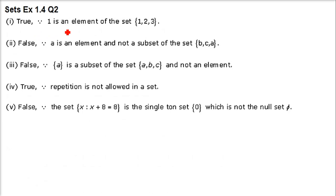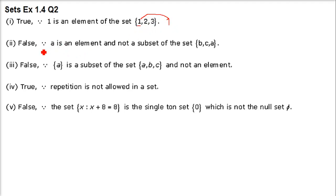Next question: state whether the following statements are true or false. Statement 1: 1 ∈ {1, 2, 3}. This is correct because 1 is an element and it belongs to {1, 2, 3} — it is there.